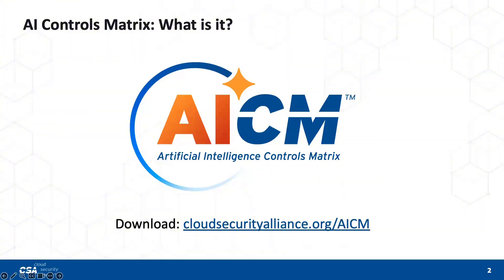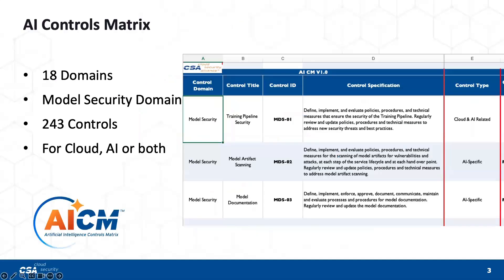There you can see the download link — we encourage you to go take a look and let us know. The controls matrix itself has 18 domains, a new model security domain, and 243 controls. It was derived from the cloud controls matrix, which made a lot of sense because the delivery of AI is really done through the cloud. Even with small models and edge models, it's very cloud-like.